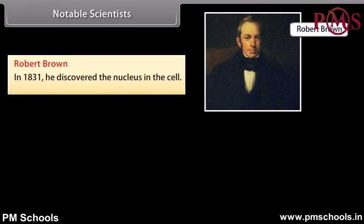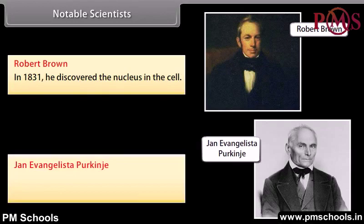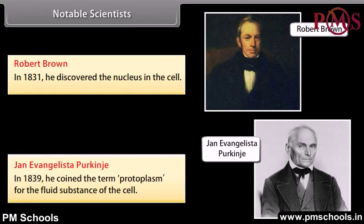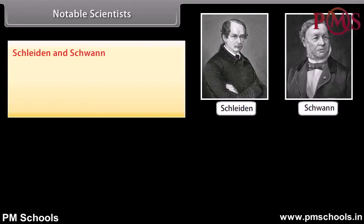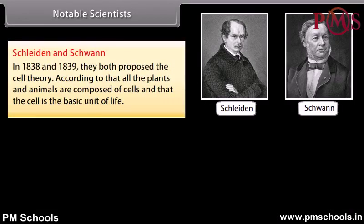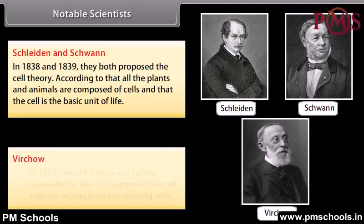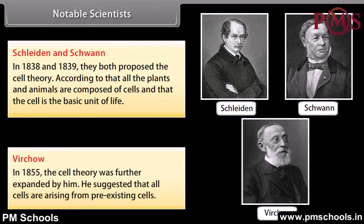Notable scientists: Robert Brown in 1831 discovered the nucleus in the cell. Jan Evangelista Purkinje in 1839 coined the term 'protoplasm' for the fluid substance of the cell. Schleiden and Schwann in 1838 and 1839 proposed the cell theory — that all plants and animals are composed of cells and that the cell is the basic unit of life. Virchow in 1855 further expanded the cell theory, suggesting that all cells arise from pre-existing cells.